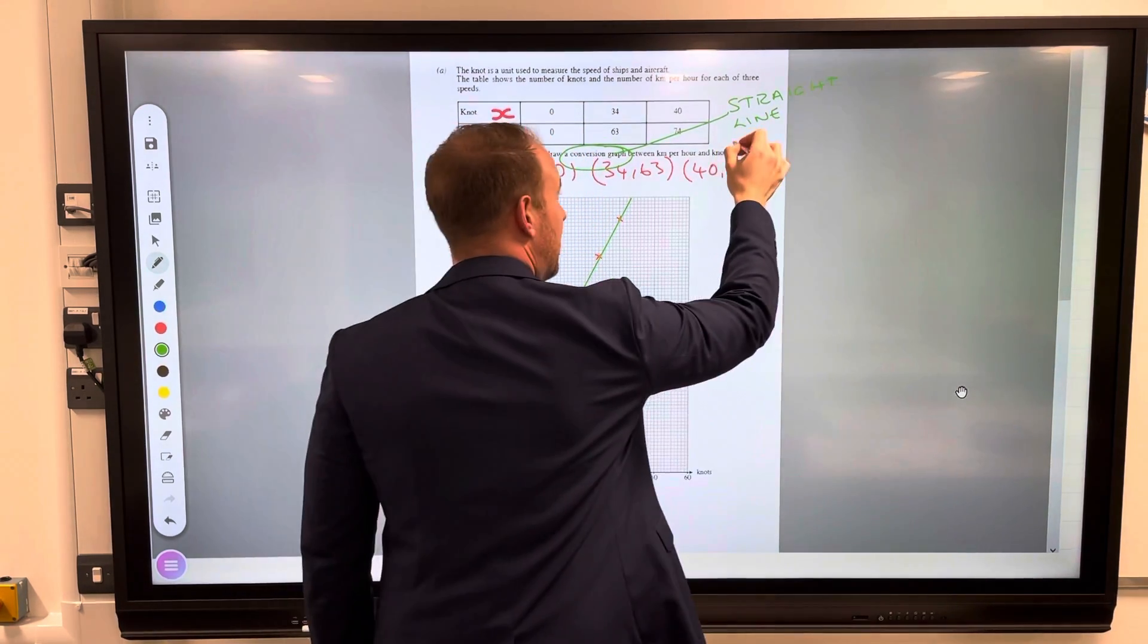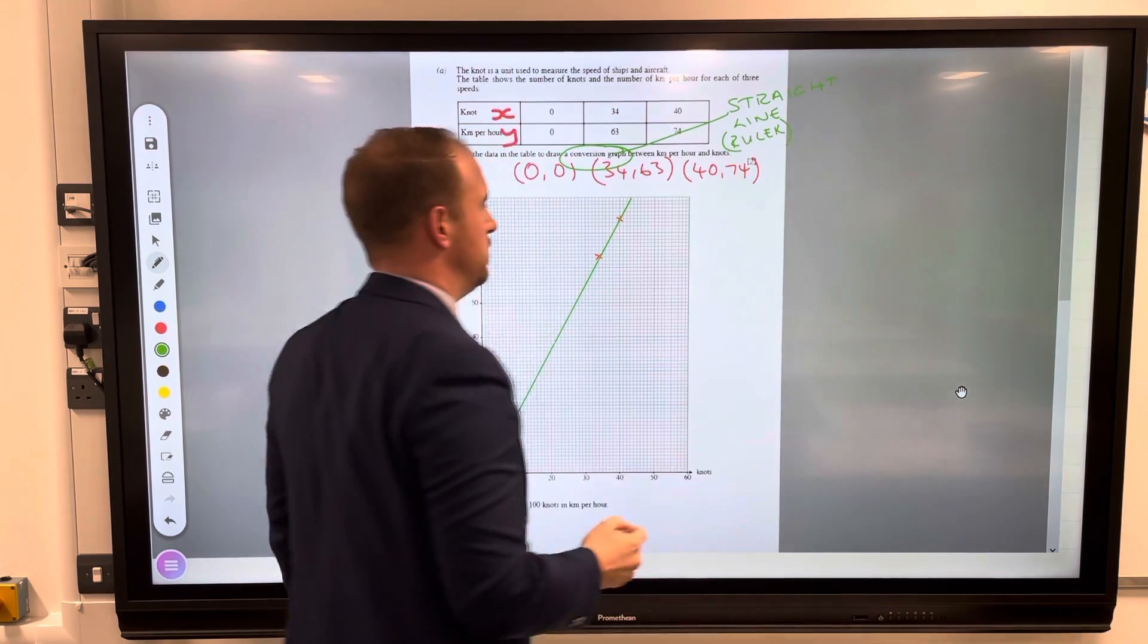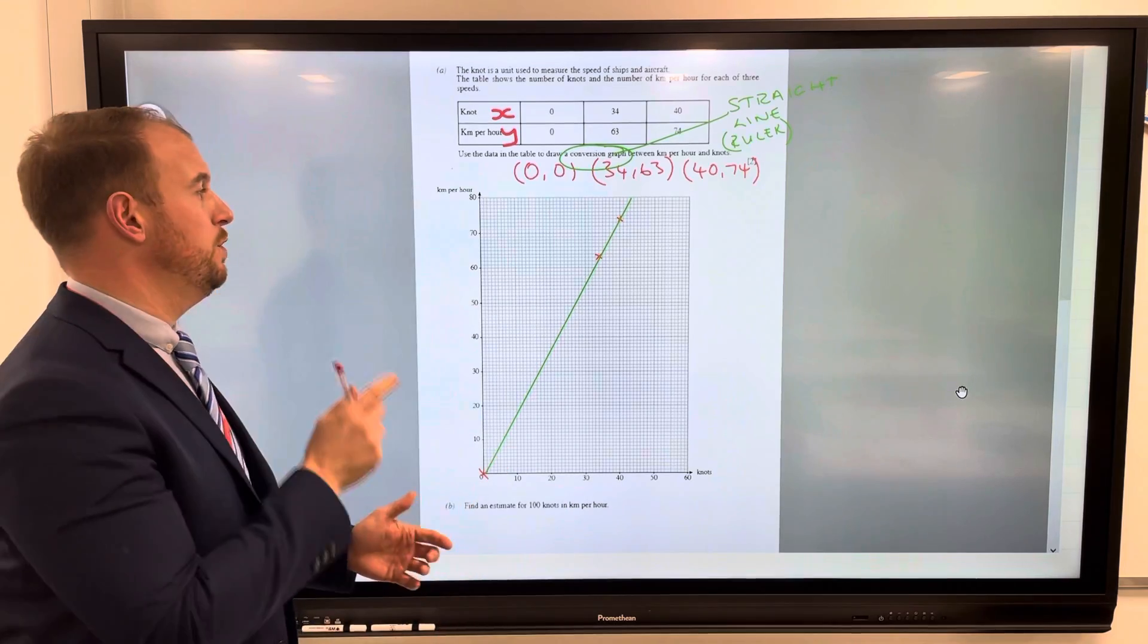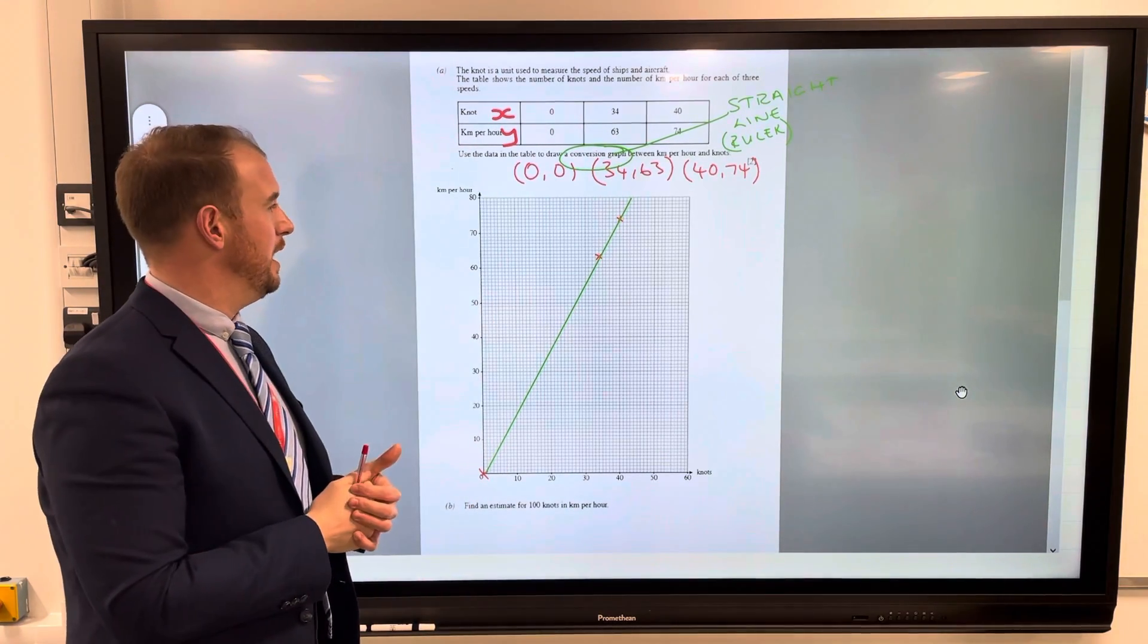And when we say straight line I mean use a ruler. I don't want to see any of this sketching, you wouldn't get the mark. Use a ruler and then join them up as accurately as you can.